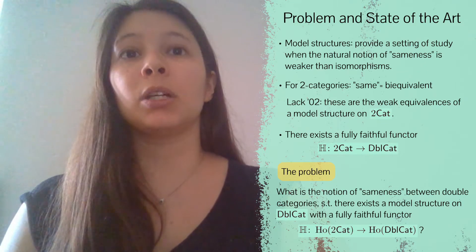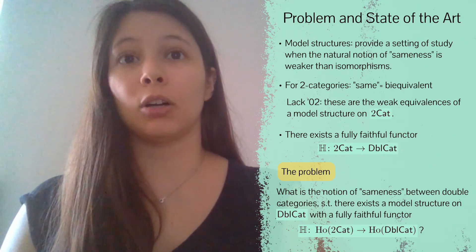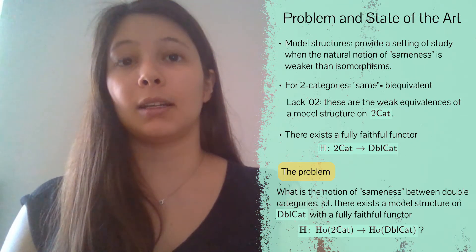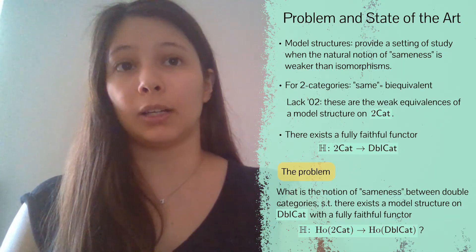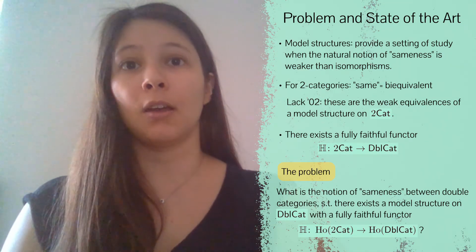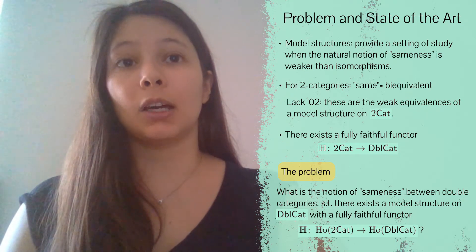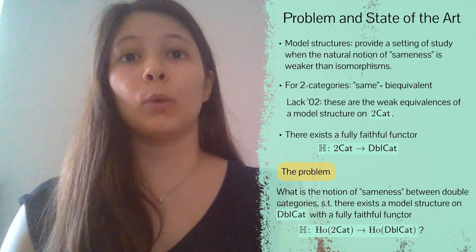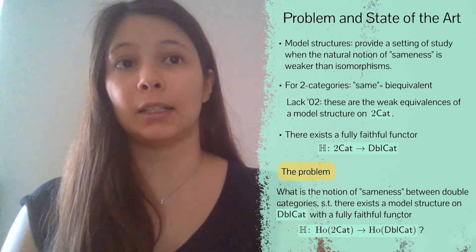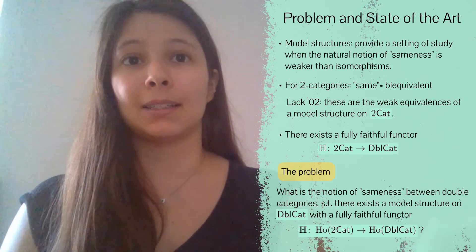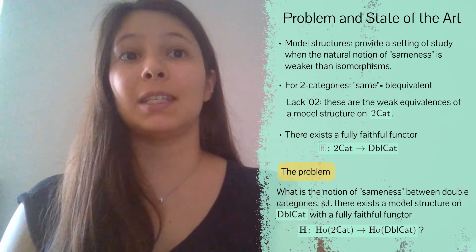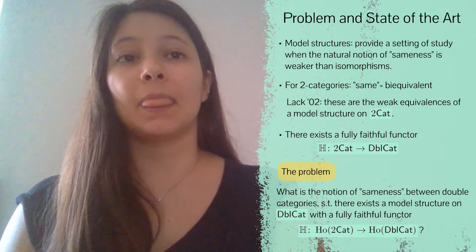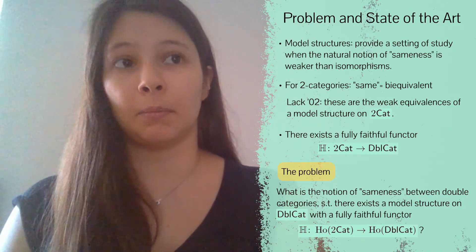In this project we consider a different type of two-dimensional structure called double categories. These are closely related to 2-categories in the sense that there exists a fully faithful embedding of 2-categories into double categories, meaning for all categorical purposes we can think of 2-Cat as living inside of Double-Cat. With this embedding in mind and the model structure on 2-Cat defined from the bi-equivalences, the question we ask is: what is the notion of sameness between double categories such that there exists a model structure on Double-Cat that gives a homotopical version of this embedding?